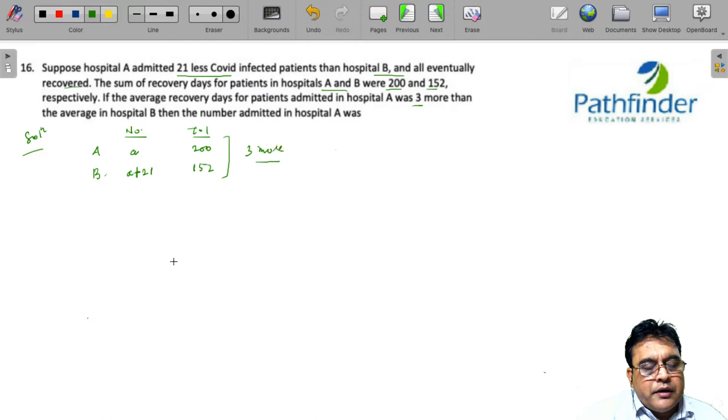So suppose A patients were admitted in hospital A and total recovery days was 200. So sum of all the recovery days. So average recovery day for A would be 200 divided by A, and similarly average recovery day for B will be 152 divided by A plus 21, and you are told that the difference of these two is equal to 3.